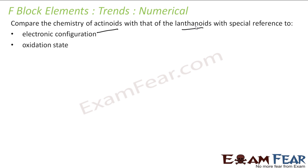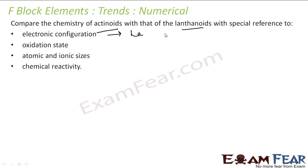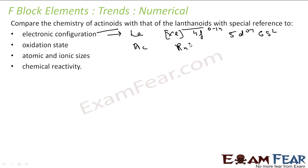Compare the electrochemistry of actinoids with that of lanthanides with special reference to electronic configuration, oxidation state, atomic and ionic size, and chemical reactivity. The electronic configuration of lanthanides is [Xe] 4f(0–14) 5d(0–1) 6s2. For actinides, there is a difference in electronic configuration, and the 5f orbital takes part in bonding to a greater extent.